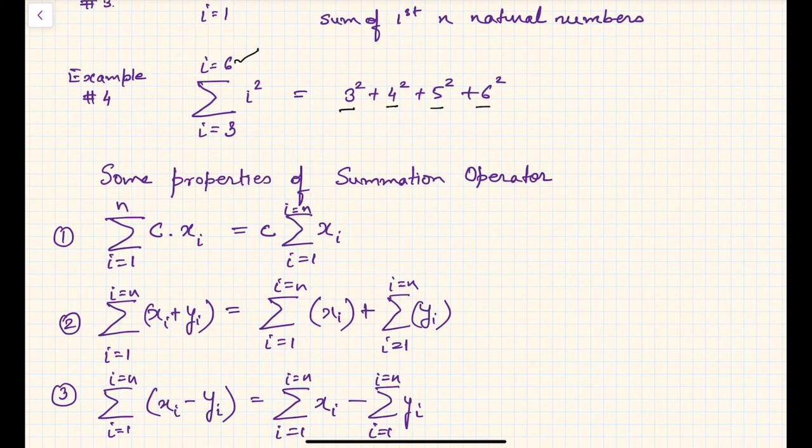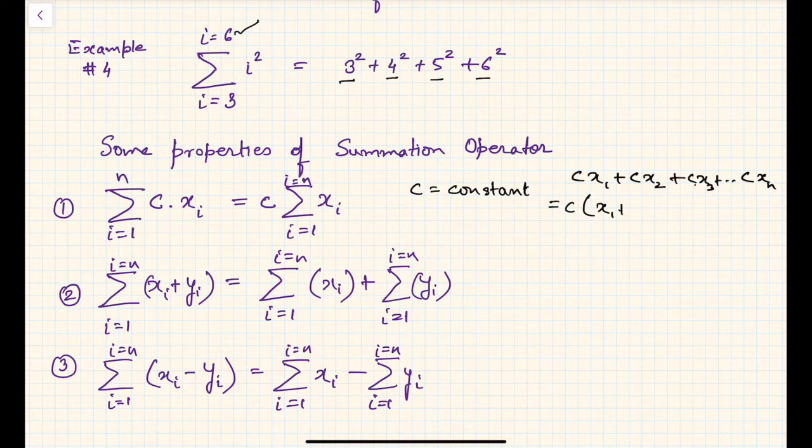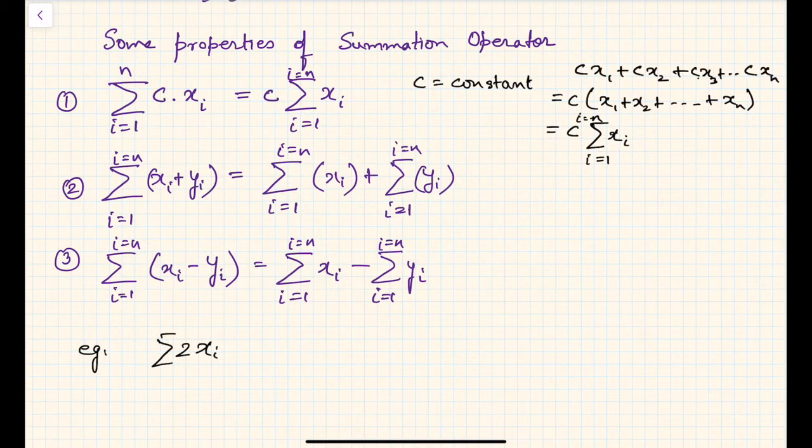Now let us understand some properties of summation operator. Summation from i equals 1 to n of c times x_i, where c is a constant and x_i is the variable. The left-hand side says c x1 plus c x2 plus c x3 and so forth till c xn. You can take c common and write c times (x1 plus x2 till xn), which is c times summation x_i. For example, 2 x_i from i equals 1 to 10 equals 2 times summation x_i.